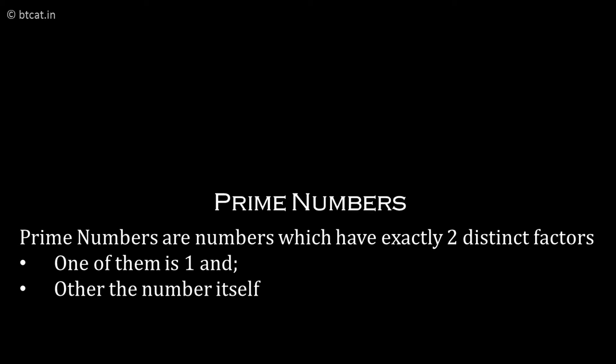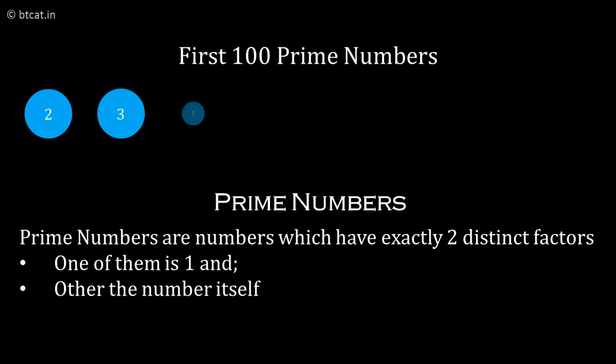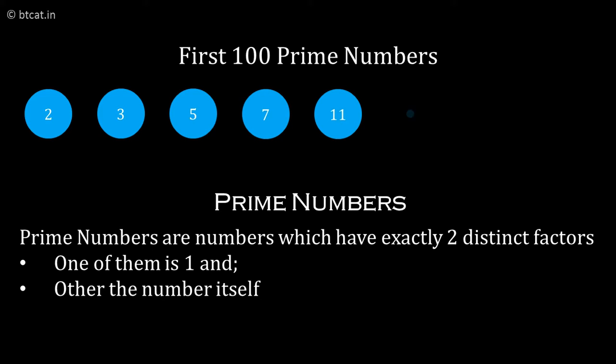If you see first hundred prime numbers, prime numbers are numbers which have exactly two distinct divisors or factors. One of them is 1, the other is the number itself. So prime numbers are 2, 3, 5, 7, 11, 13, 17 and so on.